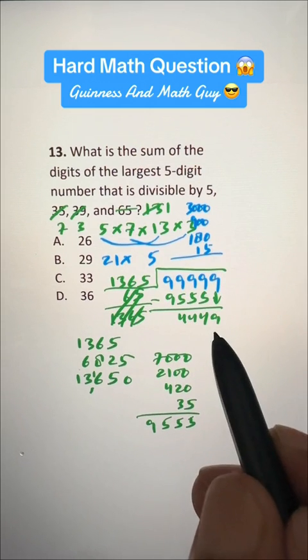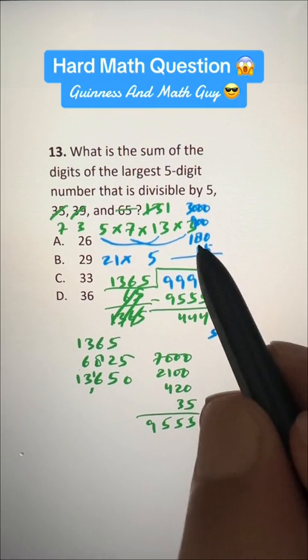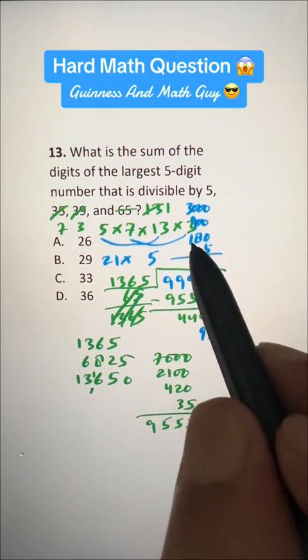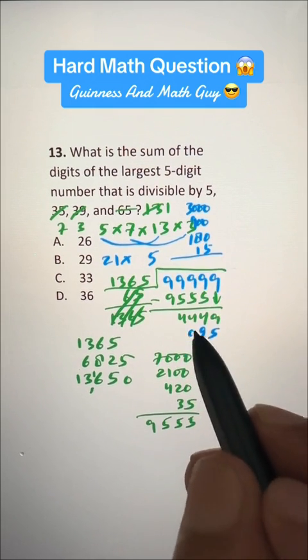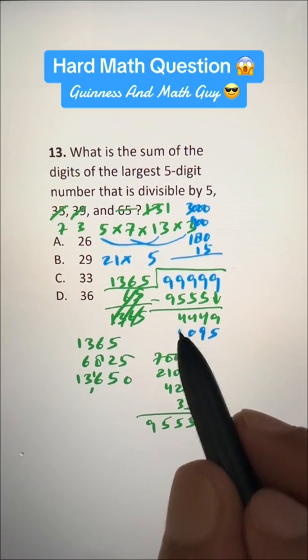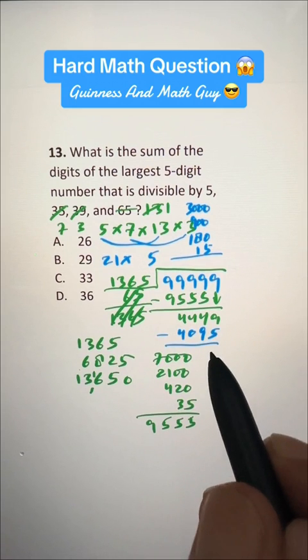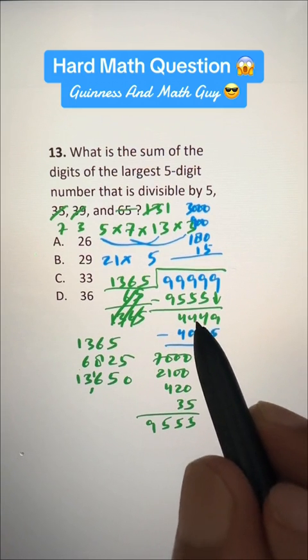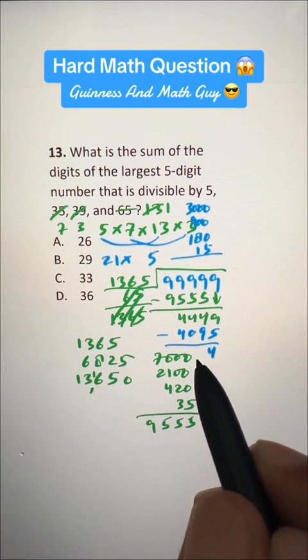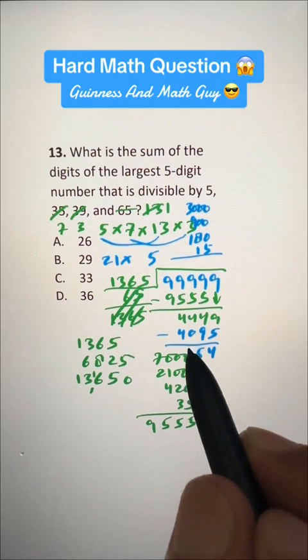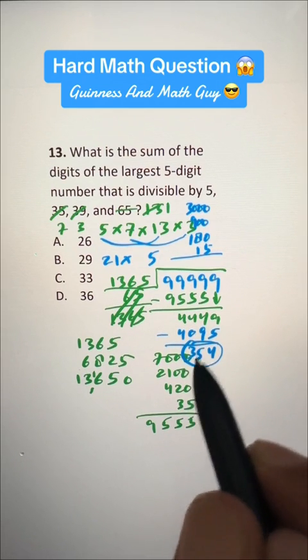And if we add them, this is 5, and this is 9, and 9 plus 1 is 0 here, and 3 plus 1 is 4. So, we have 4095, if we subtract them, 9 minus 5 is 4, and this is 14 minus 9 is 5, and we have 3 here. So, this 354 is remainder,